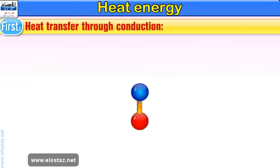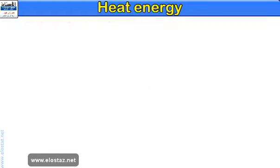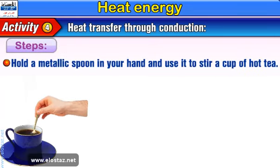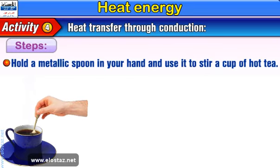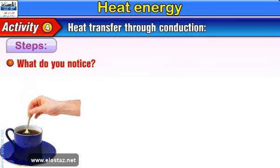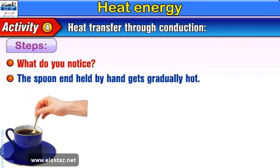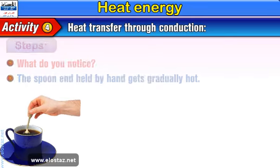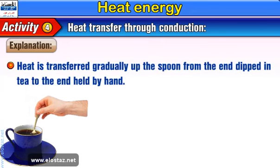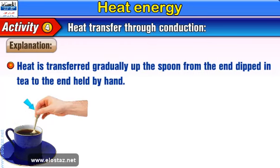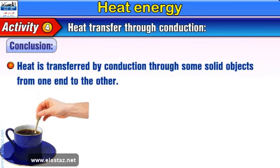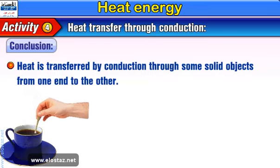First, heat transfer through conduction. Activity 4 will illustrate conduction of heat. Steps: Hold a metallic spoon in your hand and use it to stir a cup of hot tea. What do you notice? The spoon end held by hand gets gradually hot. Explanation: Heat is transferred gradually up the spoon from the end dipped in tea to the end held by hand. Conclusion: Heat is transferred by conduction through some solid objects from one end to the other.